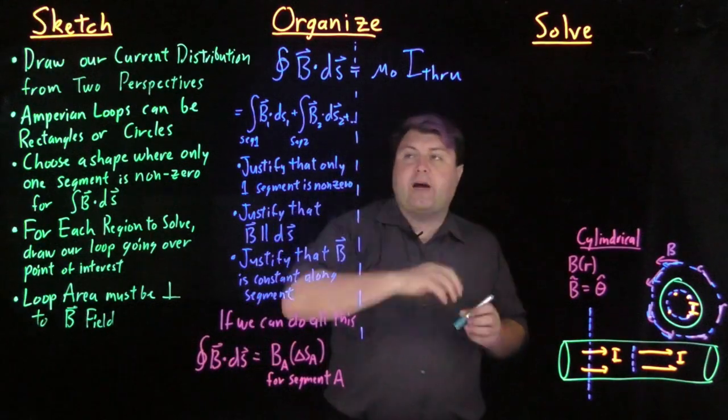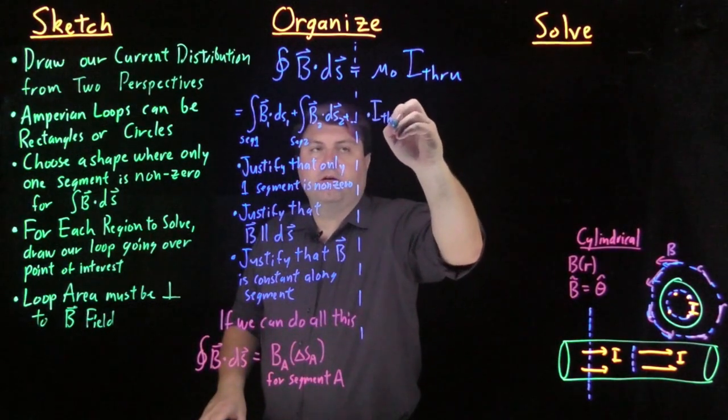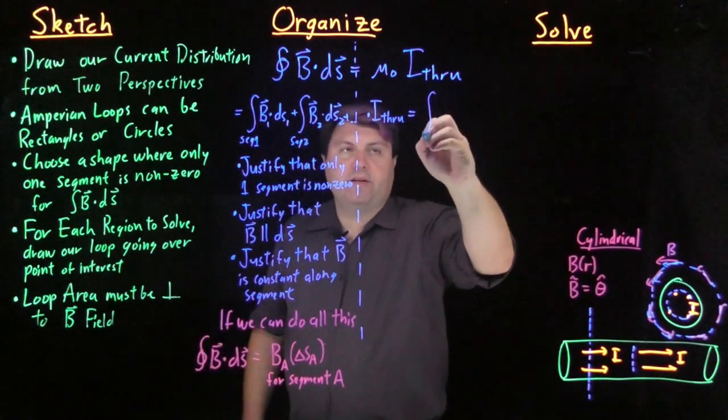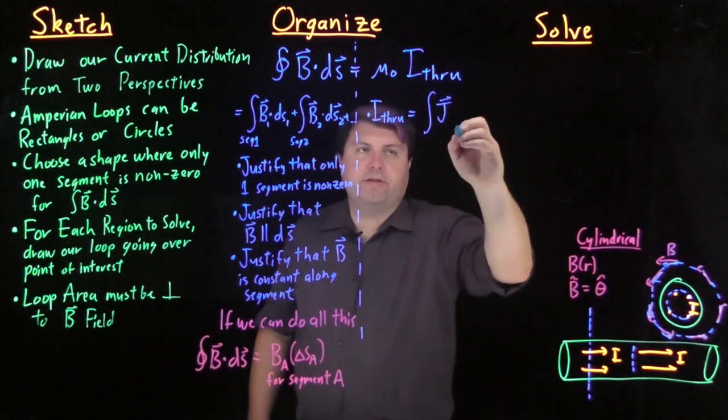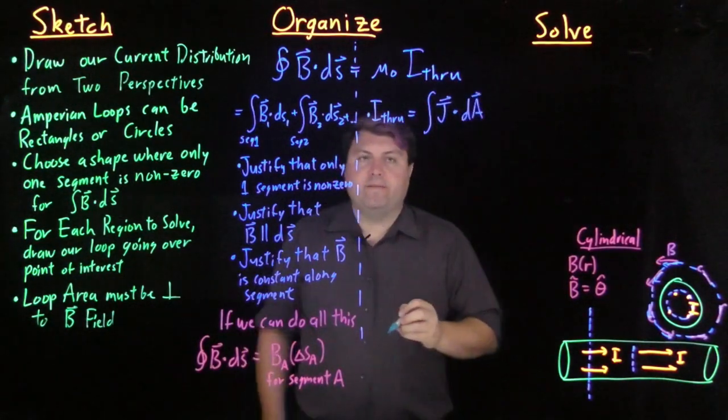So for the mu naught I through section, I through can be written as the integral of the current density J dotted with dA.